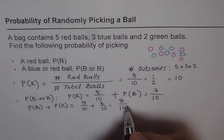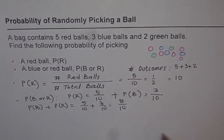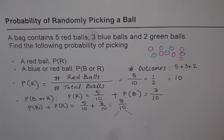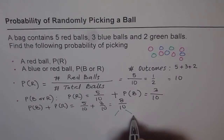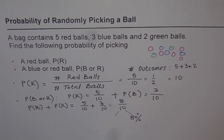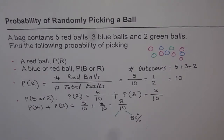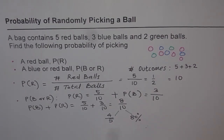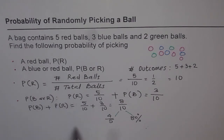You can always simplify this and write it as a fraction, or give probability as a percent. If you want to give probability in percent, multiply both numerator and denominator by 10 to get 80 over 100, which is 80%. Or you can divide both by 2 and write it as 4 out of 5. So the probability of picking a red ball or a blue ball is 80%, or 4 out of 5.